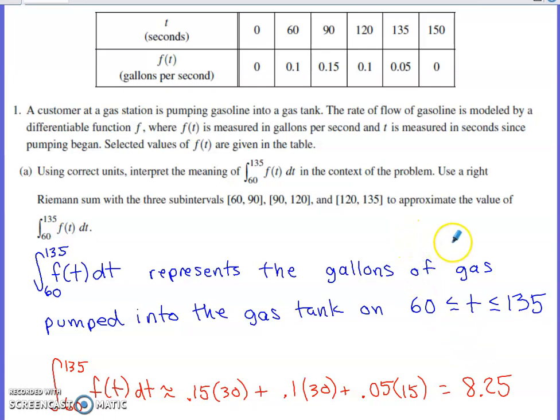Pretty typical of what problem number one in an FRQ set is going to ask. It's usually involving a rate of change. In this case, we have a table of values.